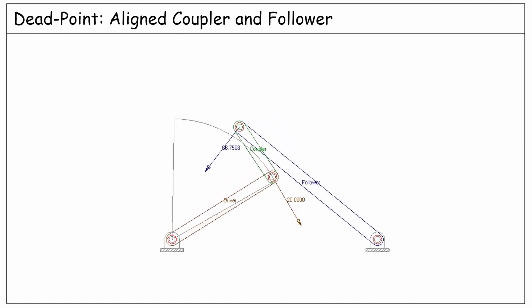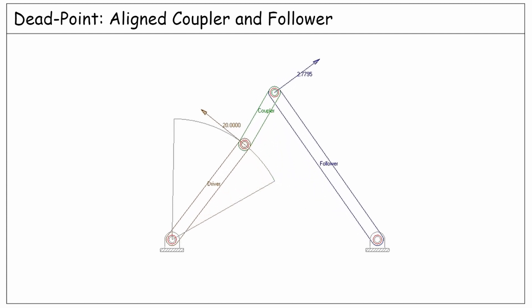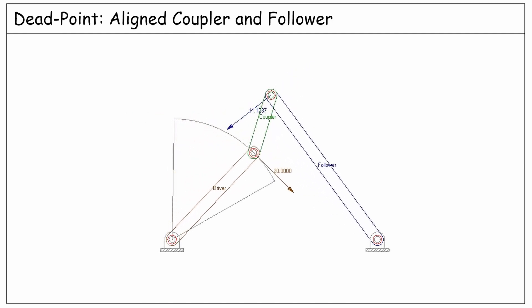Then there is another dead point here when those links become aligned again. These two dead points determine the range of angle for a driver link, as it is demonstrated in this example.